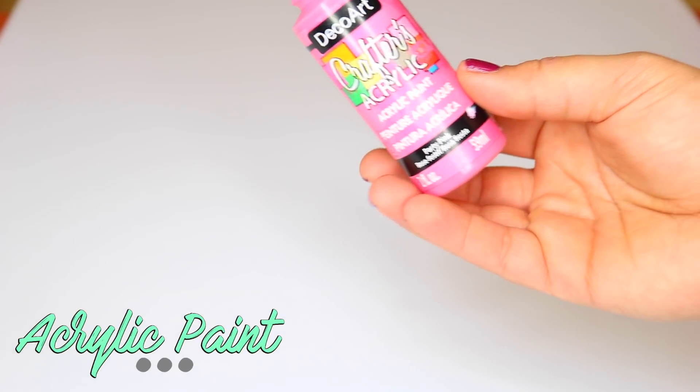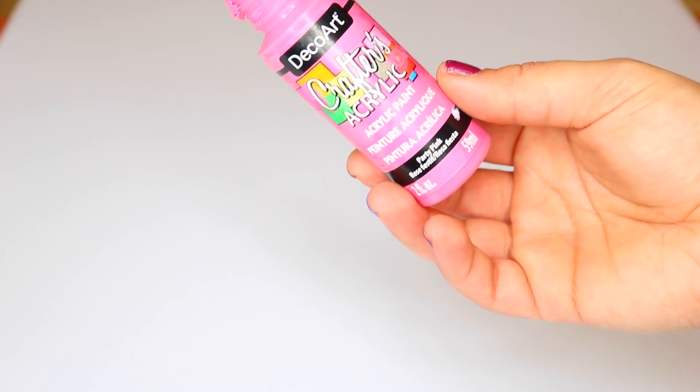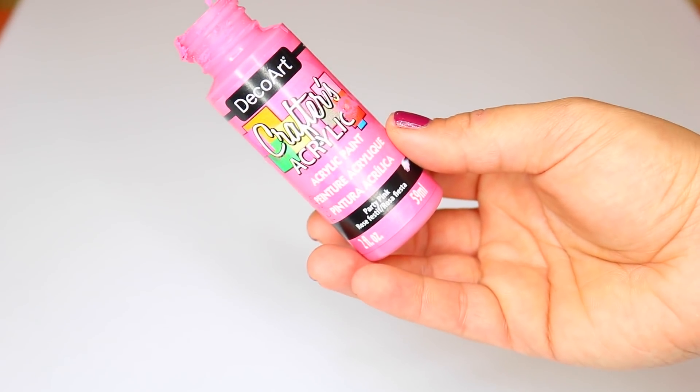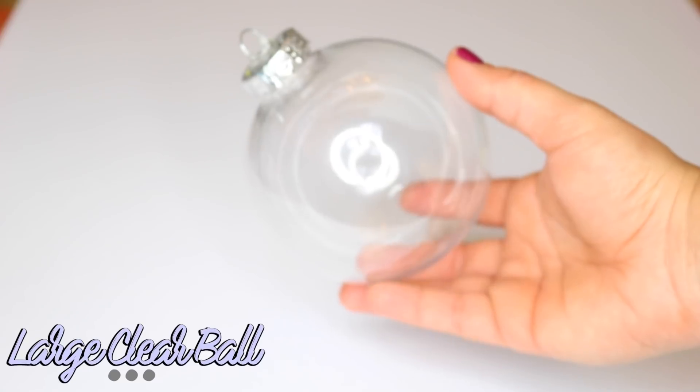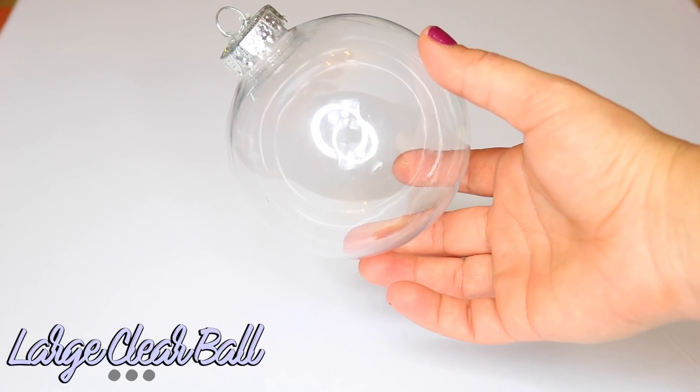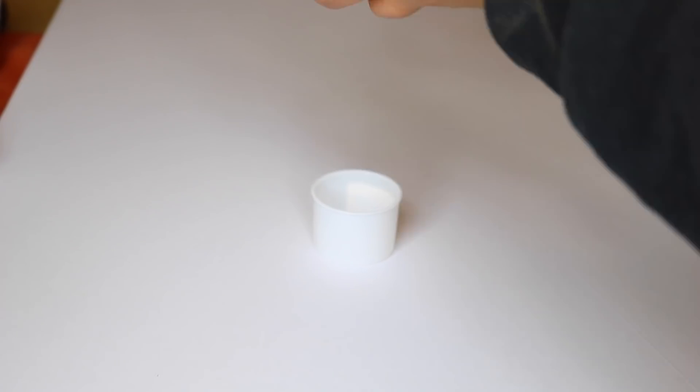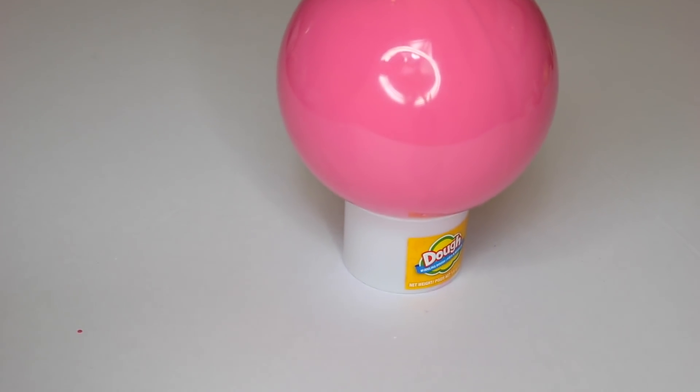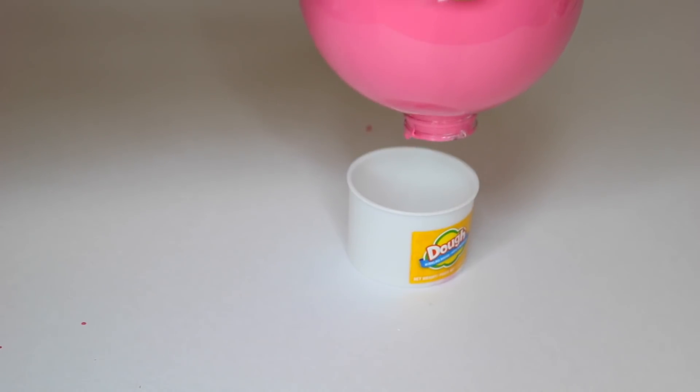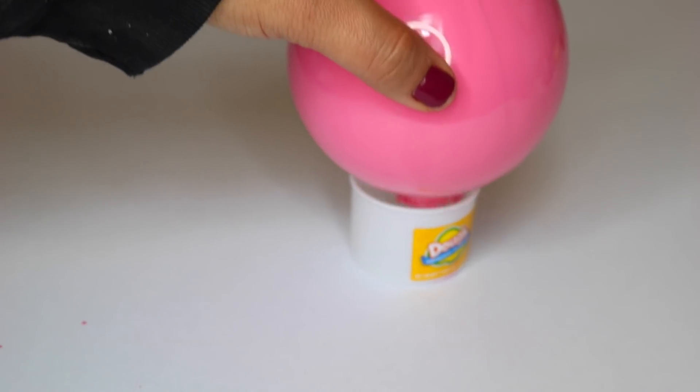I'm going to add our pink paint and you want to just add a good amount, twirl it all around so that it coats the whole inside of the ornament. And then what I like to do is inside of a small container I just flip it upside down and make sure all the excess paint drips down. This way you won't have a runny ornament.